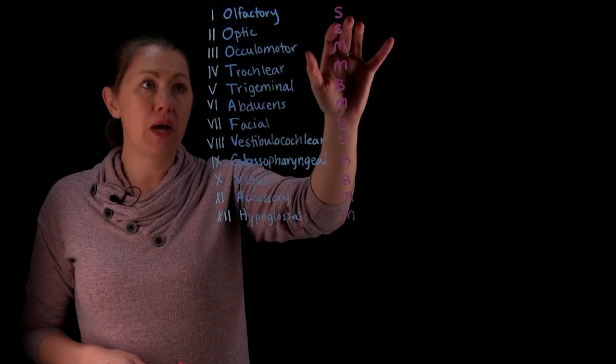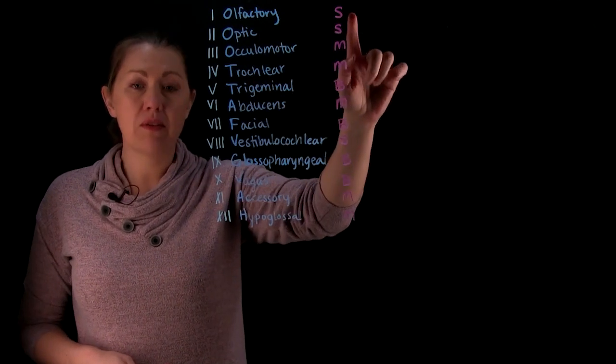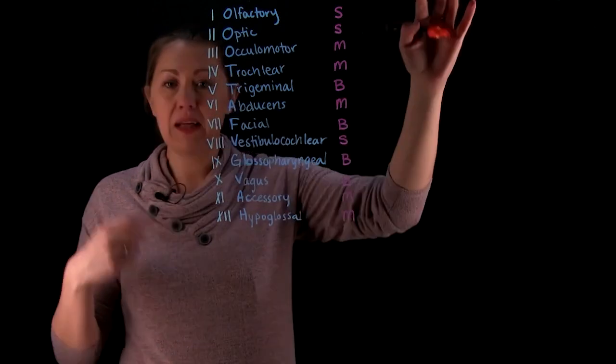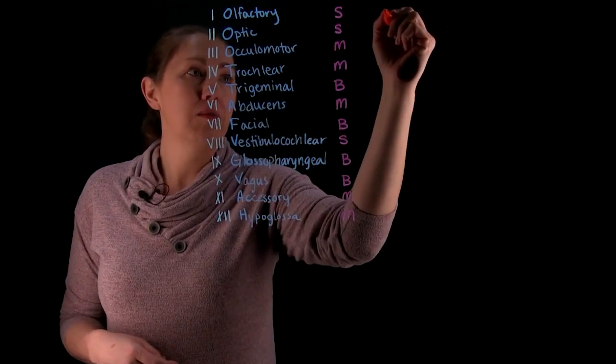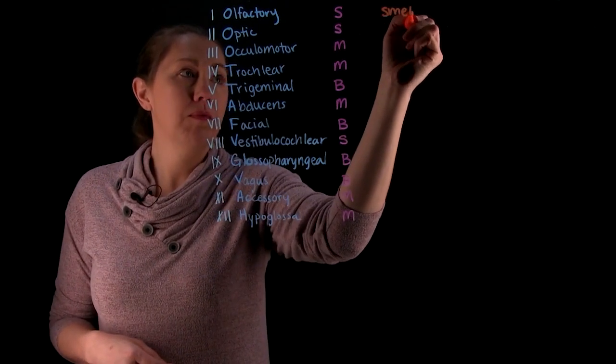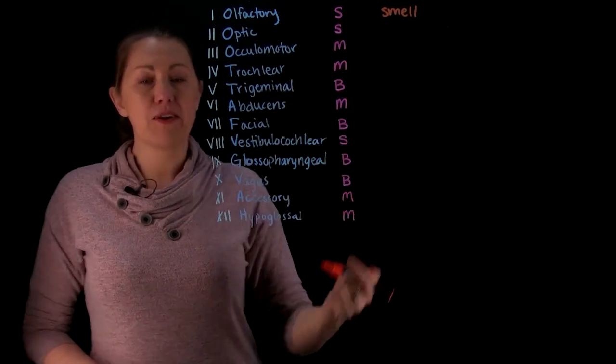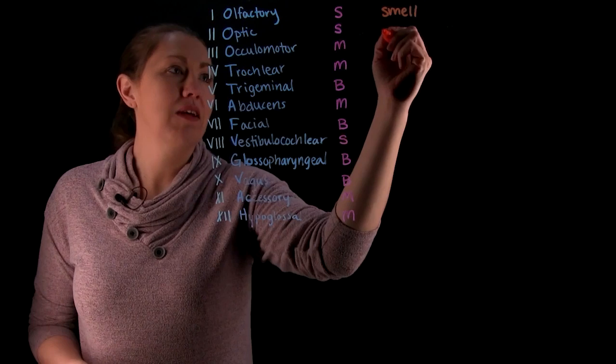Now this is going to give you a lot of hints as to what kind of information you're dealing with and what they might be doing. So if we come up to this first one, so if we're looking at olfactory, now we know it's a sensory only. And so specifically the sense that you're dealing with, if you're going to make like a column for function, it's going to be smell. Your optic here is another sensory one. So what sense for that one? If it's called optic, well, that's going to be your sense of sight.